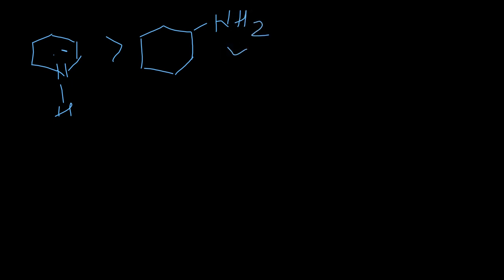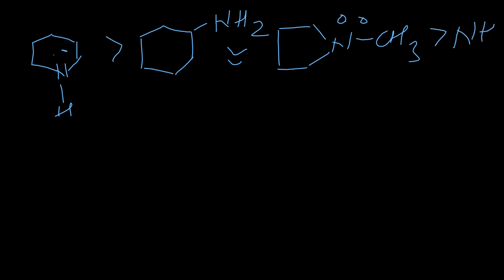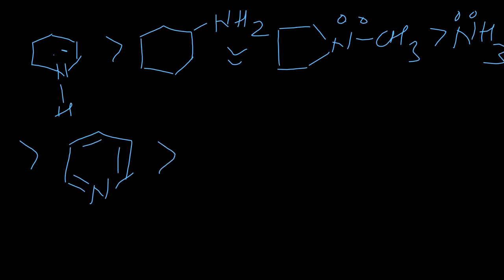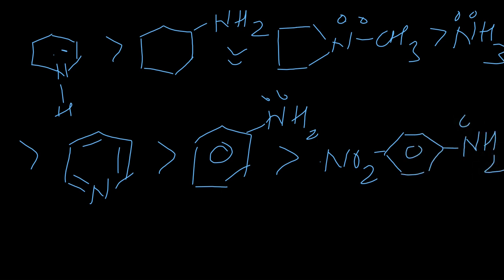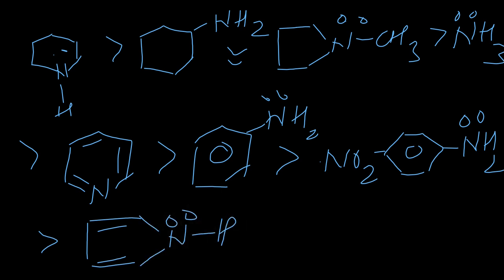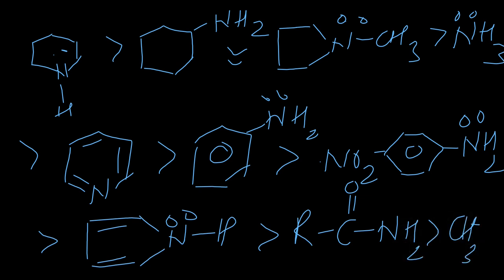These two structures (piperidine and cyclohexylamine) have almost the same basic strength. This is more basic than NH3, which is more basic than pyridine. Pyridine is more basic than aniline, aniline is more basic than para-nitroaniline, para-nitroaniline is more basic than pyrrole, pyrrole is more basic than amides, and last is cyanide.